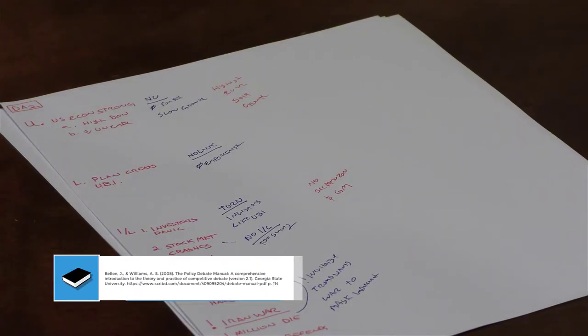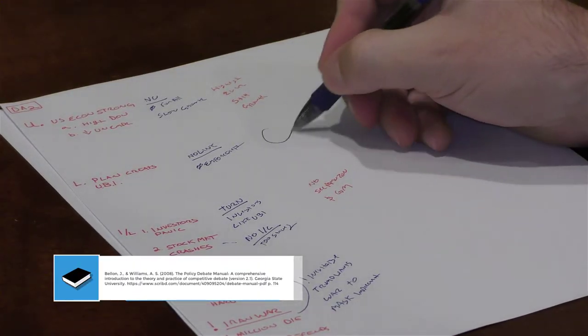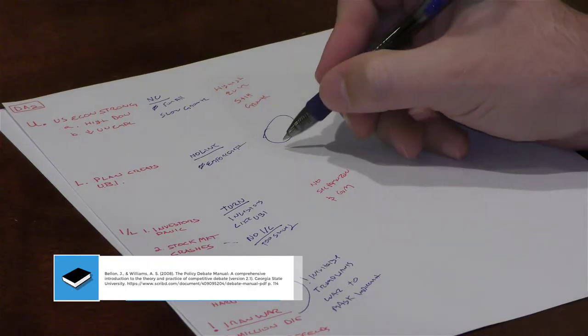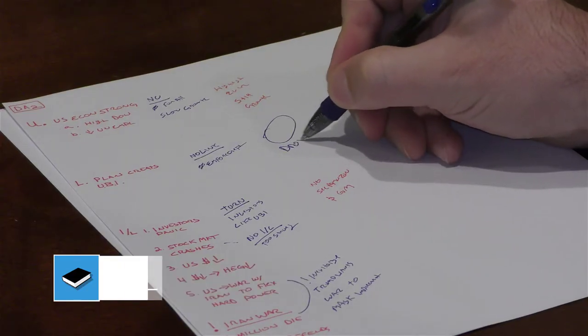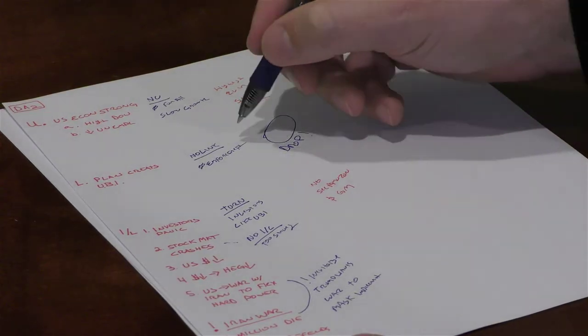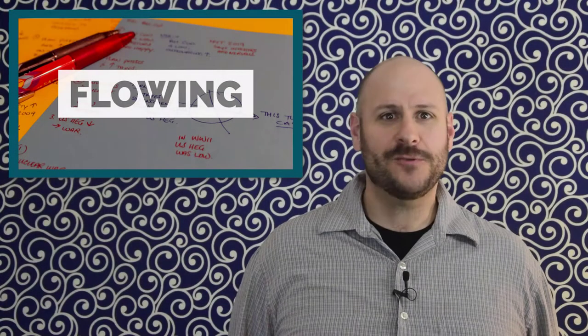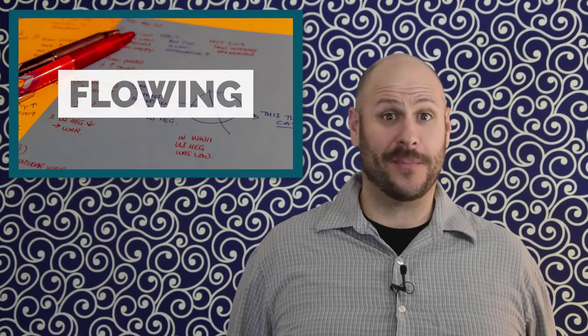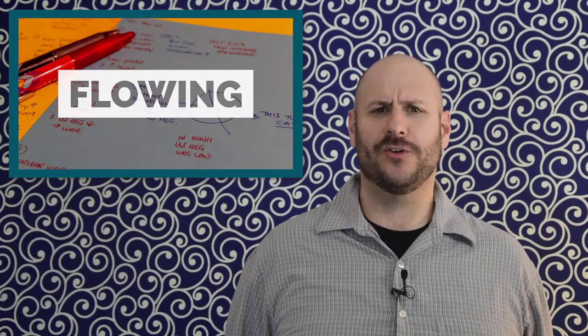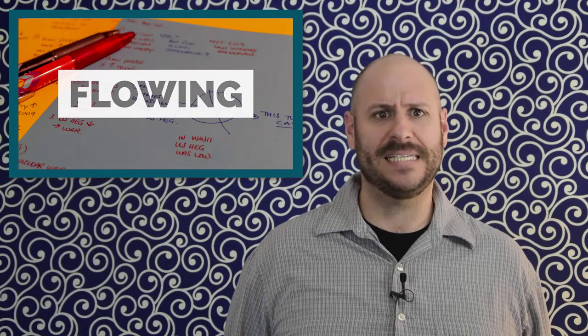In debate, dropping an argument means to concede an opponent's argument by not answering it. You also can drop and therefore concede your own arguments if you fail to extend them during your next speech. For these reasons, having a clear and comprehensive record of the round ensures that you do not lose the round by missing key arguments of your opponents or forgetting to extend your own points.